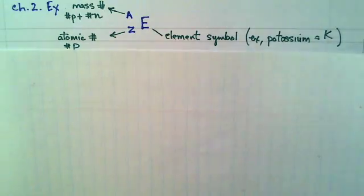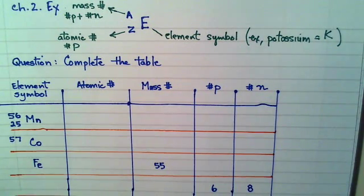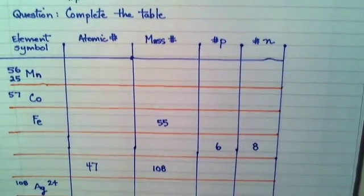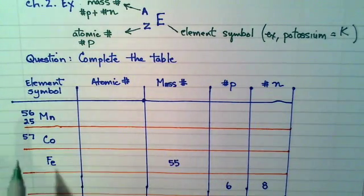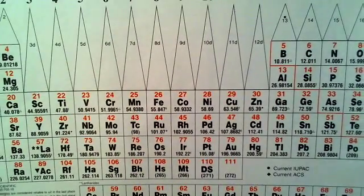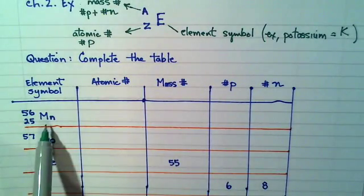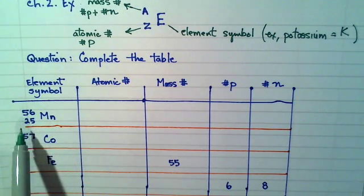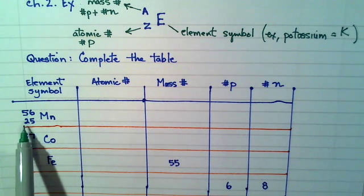So let's continue on with an example. So an example of a question on this stuff that you might see in a test, quiz, exam situation, most likely a test or quiz situation, is something like this where we're asked to complete a table. So in this first one, we've got the element symbol MN. And if I look on the periodic table, I see that MN is right here, manganese metal. My atomic number is 25. So manganese is written, element symbol, A, Z. A is my mass number, Z is my atomic number. And so I saw that it was 25 on the periodic table.